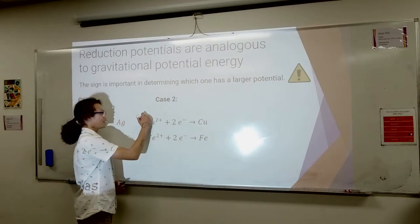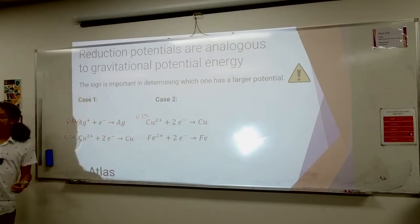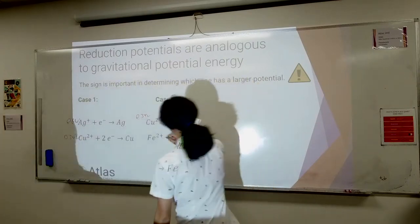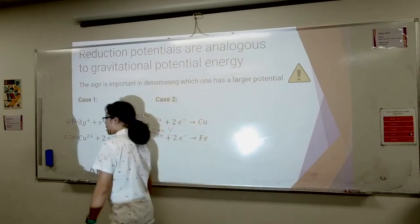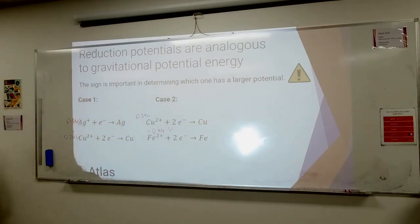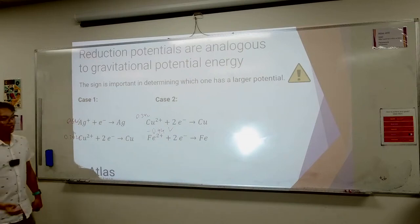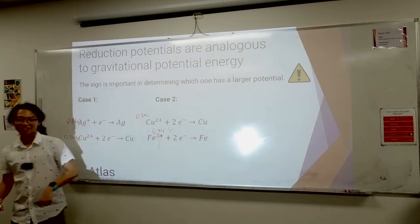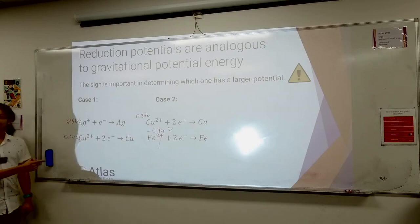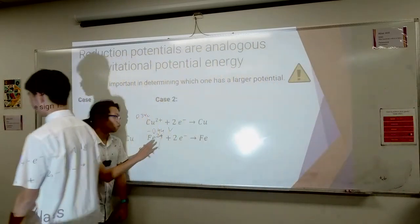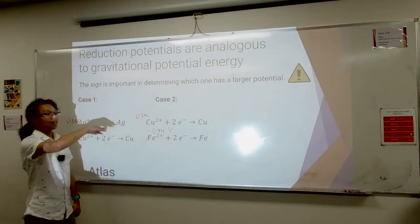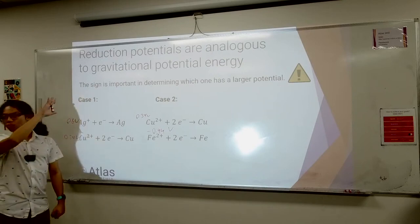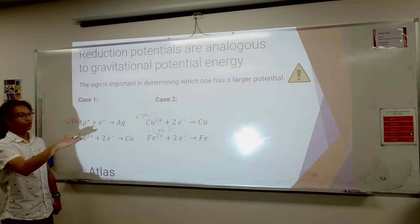Next example - copper carries over. Have a look for the iron two plus to iron neutral half-reaction and find the value. Same question: who is better at reduction? Still copper? But this iron is like negative 0.4, right? Isn't 0.4 bigger than 0.34? Yeah, the negative sign matters - it's still better at oxidation.